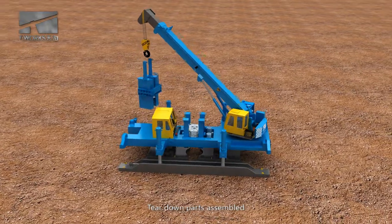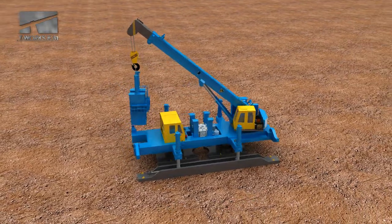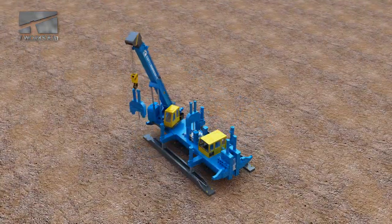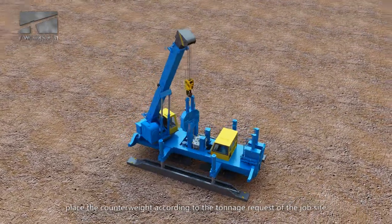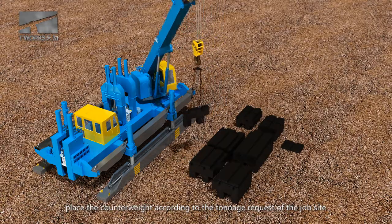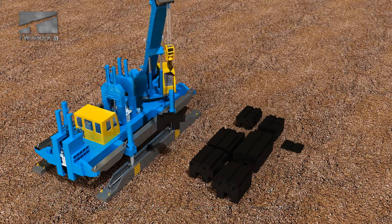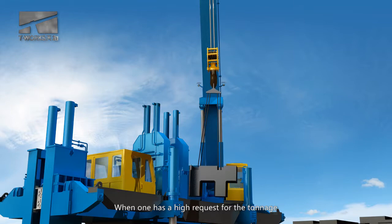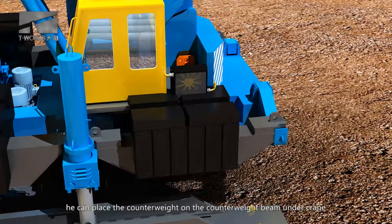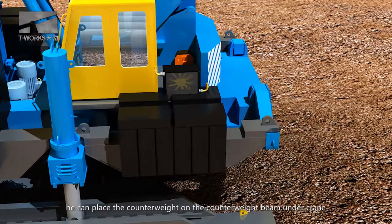Tear down parts assembled. Secondly, place a counterweight according to the tonnage request of the job site. When one has a high request for the tonnage, he can place a counterweight on the counterweight beam under crane.